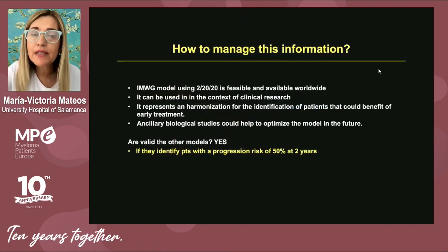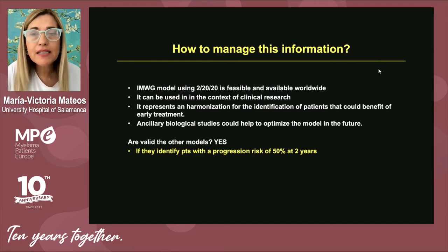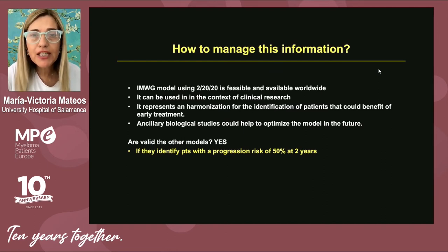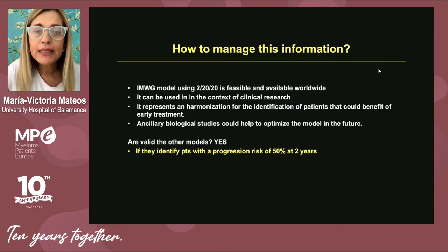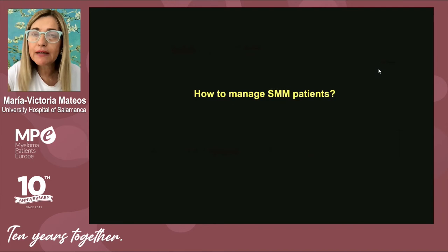How to manage this information? The most relevant step is that every physician must first evaluate the biomarkers to determine whether the diagnosis is smoldering or myeloma, and then evaluate the risk of progression to multiple myeloma. Management will be risk-adapted, and it is particularly important to identify patients where the risk of progression is approximately 50% at two years.